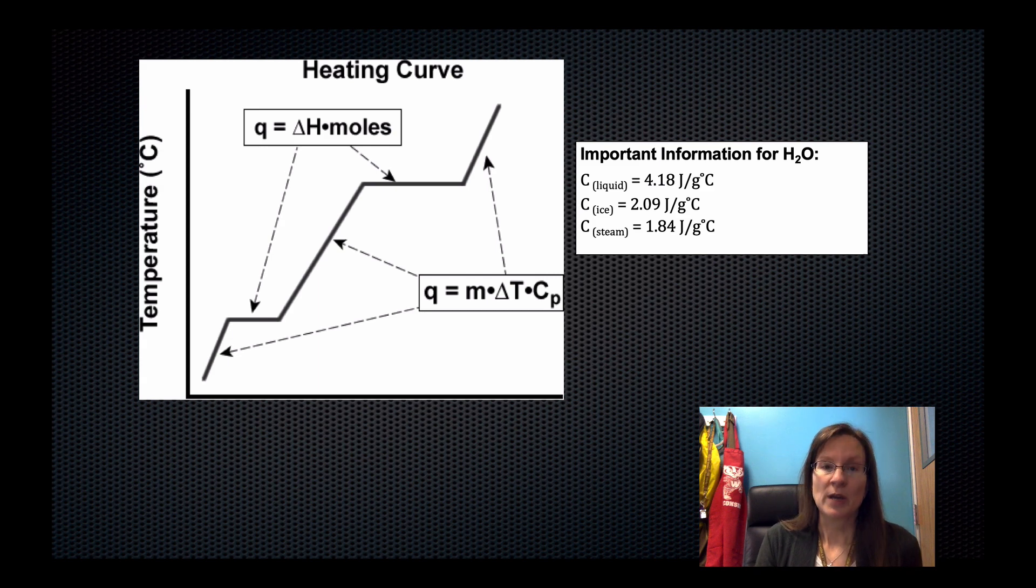You have one equation which is Q equals mc delta T and that is used for the slopes, when you have a temperature change. Q equals delta H times moles on the other hand is used when you have substance change or state of matter change. I'm going to hit each equation here briefly by itself so you can see how the equations work.